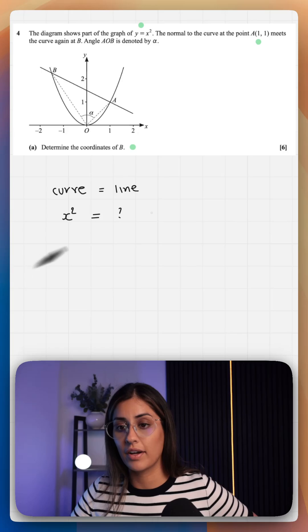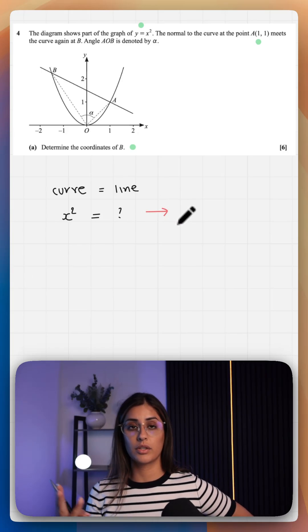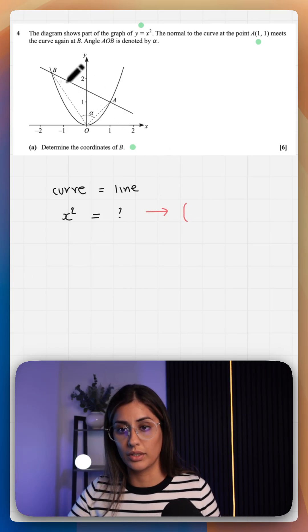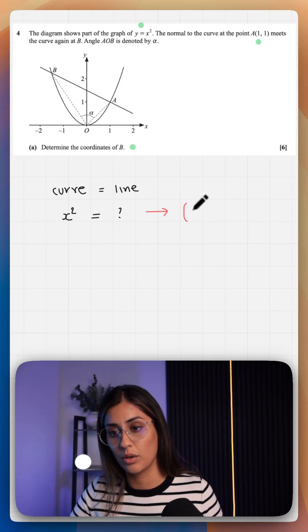Well, we can find the equation of a line using a three-step method. The first thing we need is a set of coordinates that the line passes through, which is (1,1).